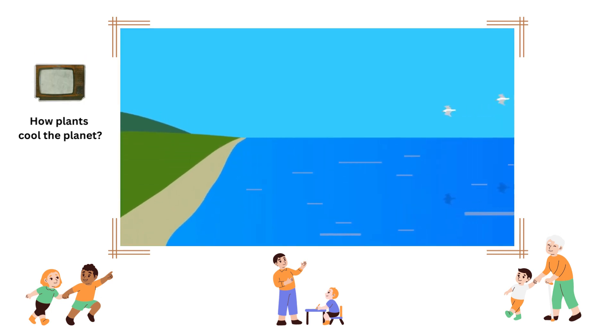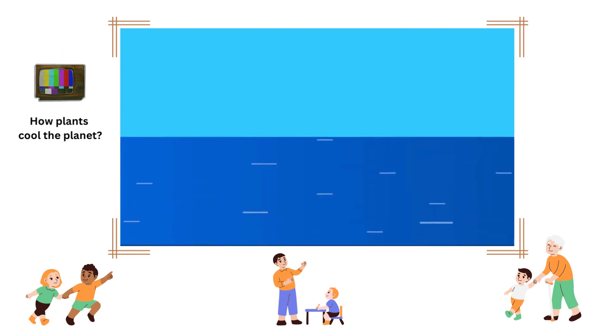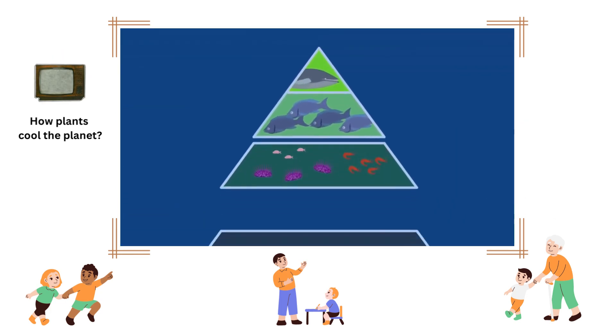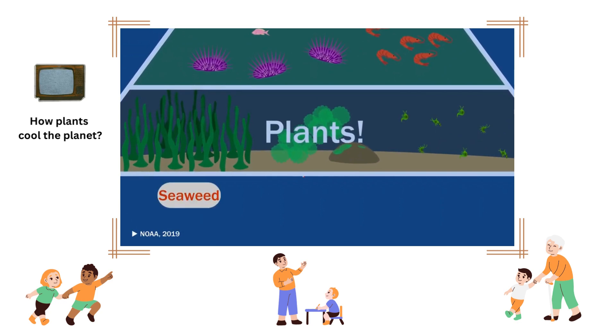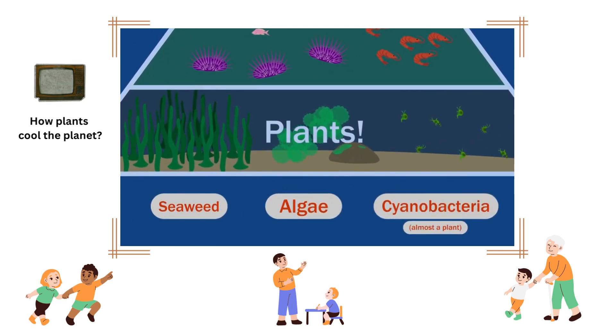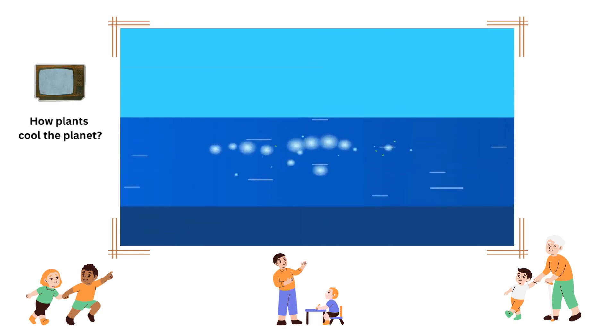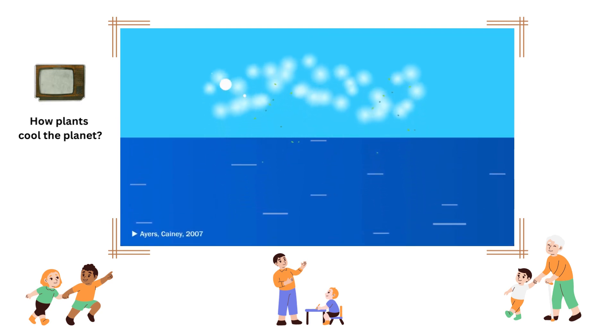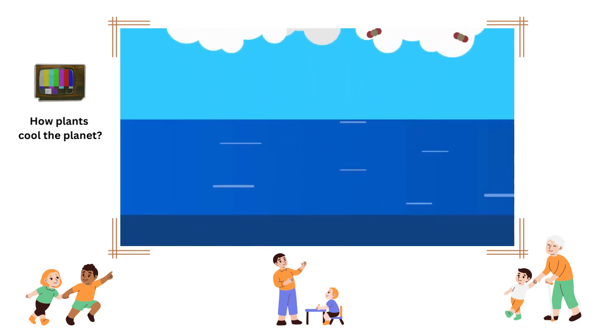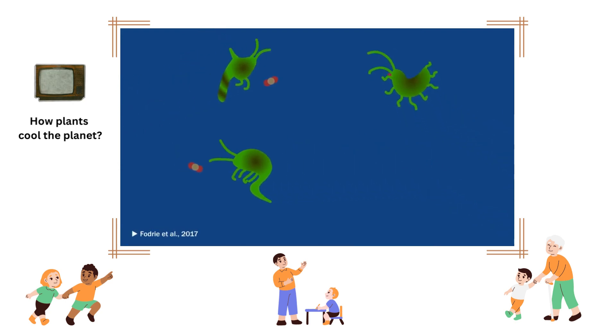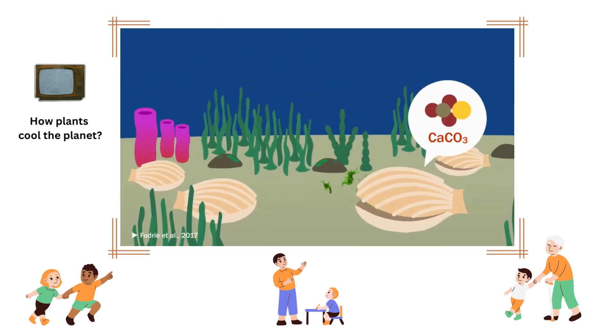Finally, let's not forget the two-thirds of the planet covered by water. The ocean food web is, like the terrestrial, based on plants. Seaweed, algae, and cyanobacteria. Okay, that one's not technically a plant, but let's just include it. Marine ecosystems contribute to cloud formation, as do land-based ones. And they also sequester massive amounts of carbon in the form of shells, which are made of calcium carbonate.